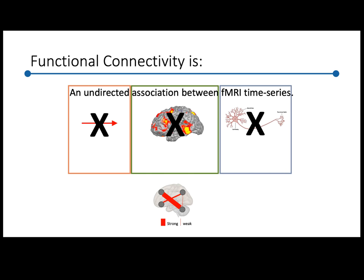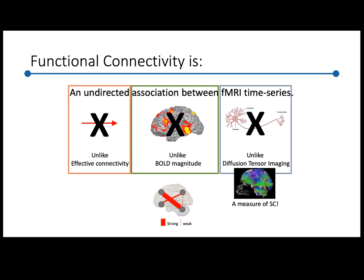These three pieces of the definition make functional connectivity different from other methods. If you're not happy about the undirected piece, maybe you'd like to use effective connectivity instead. If you're not happy about the association piece, maybe you'd like to use BOLD magnitude. And if you're not happy about this being based on fMRI time series rather than a physical biological constant, maybe you'd like to use something like diffusion tensor imaging, which is a measure of structural connectivity. I'm going to talk about that third option because it's widely perceived as the basis of functional connectivity.